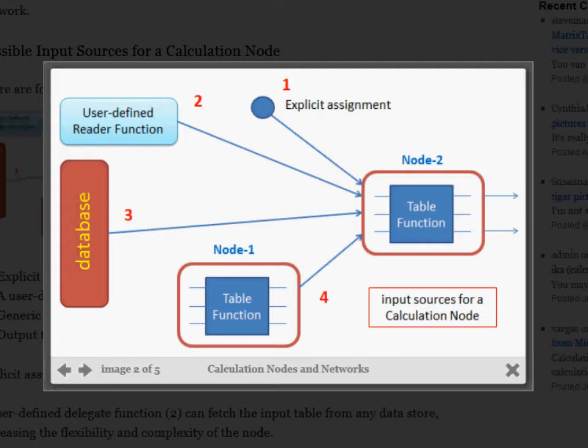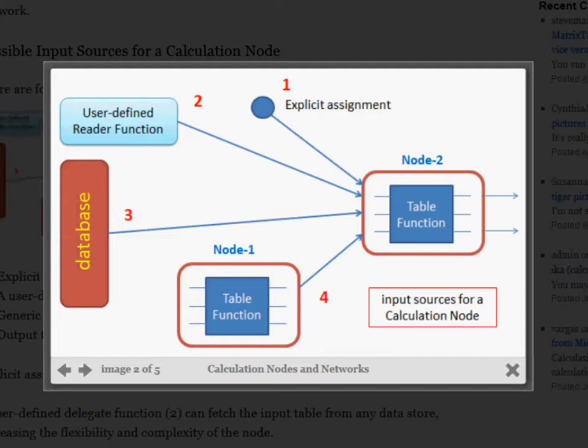A calculation node can read multiple input tables from different data sources. It can be configured so that certain events are triggered at each stage of the calculation process, and it has the ability to read and store tables for each calculation instance. This is quite useful for periodical calculations with several dimensions like year, country, version, scenario, and so on.